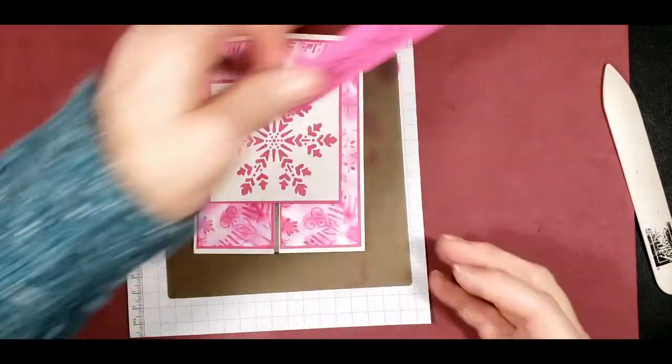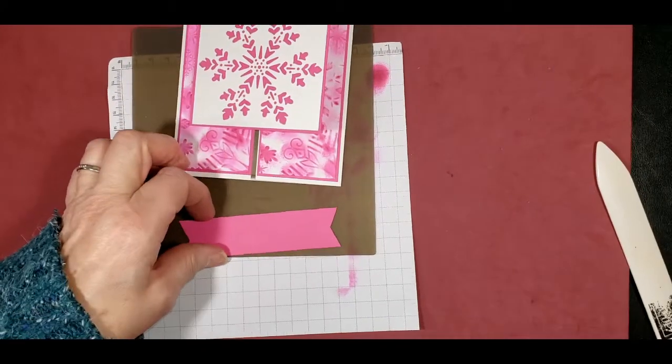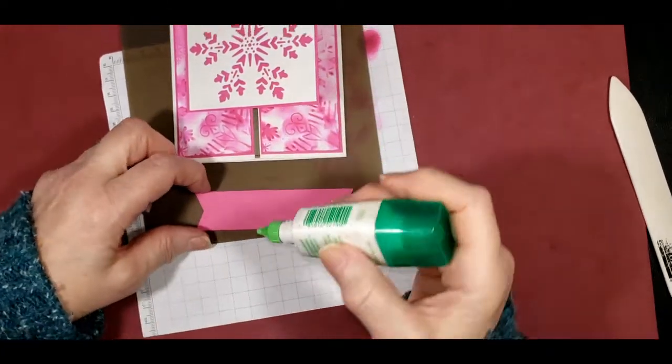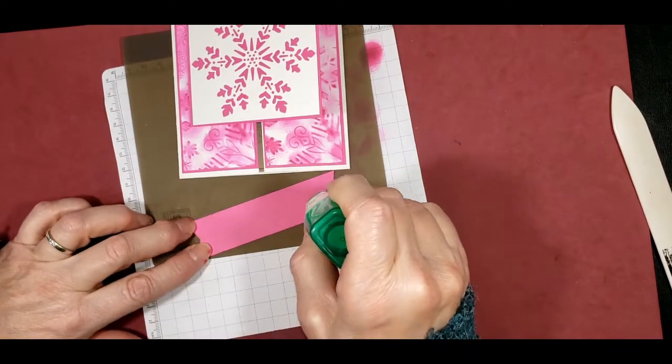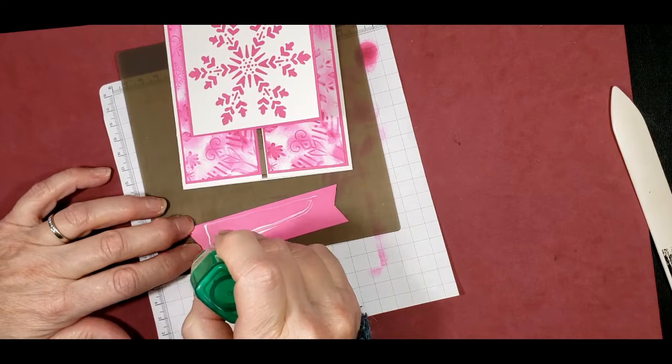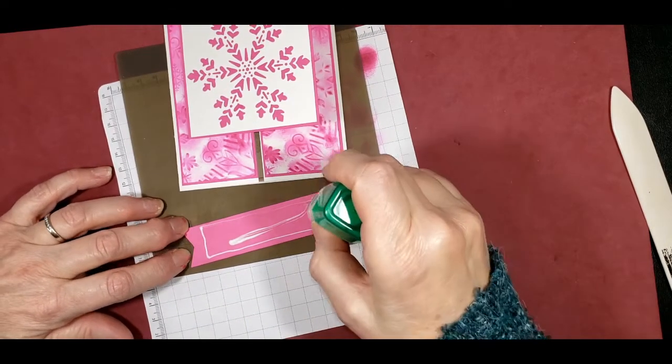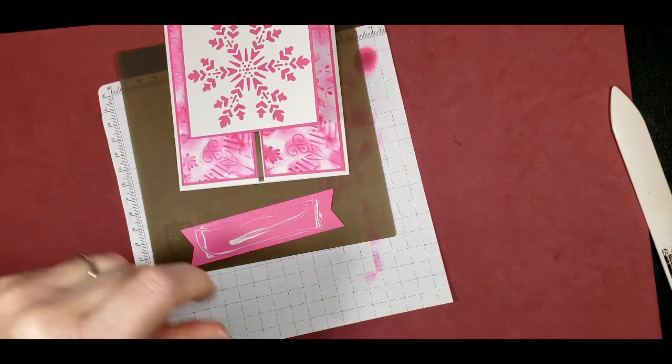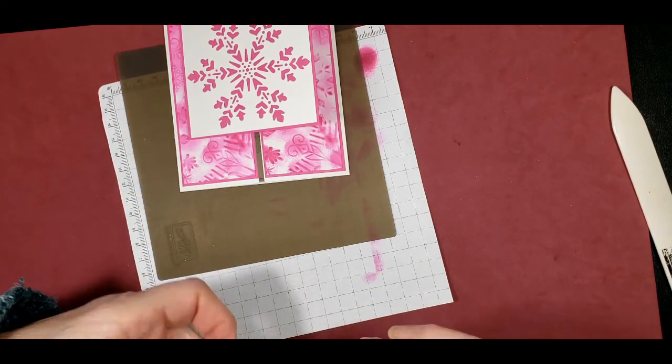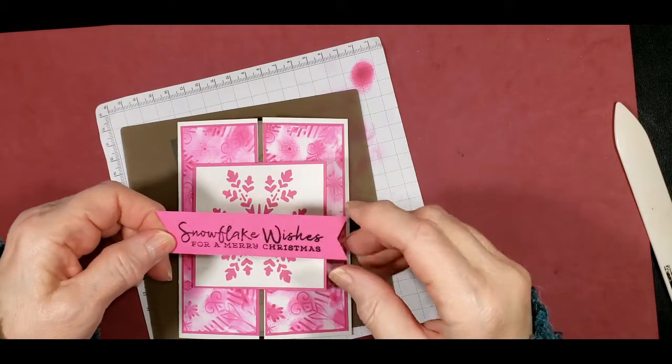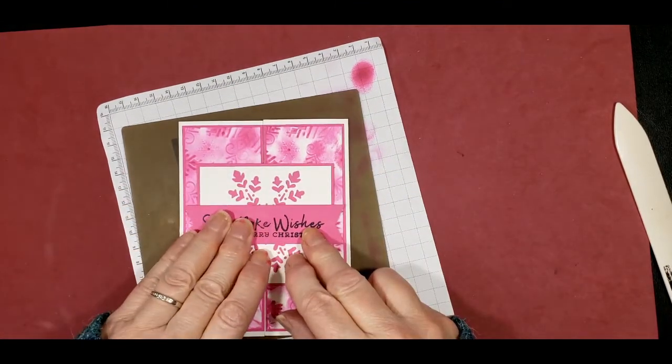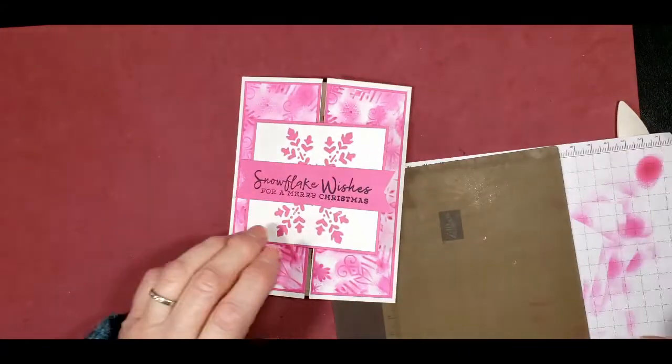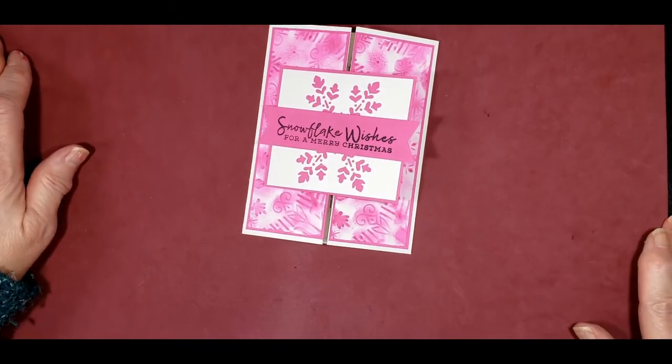And next we will do our snowflake wishes. And I'm just going to put this on with glue rather than dimensionals because I don't want to add any more height to the card. And I think we'll be done with this, so let me cap that off. And we're going to just center this on the card. And there we have it.